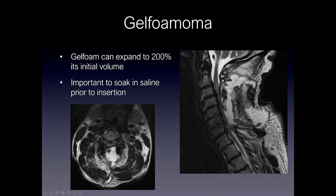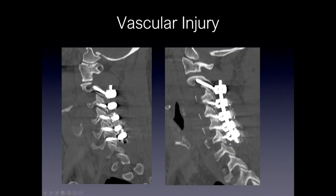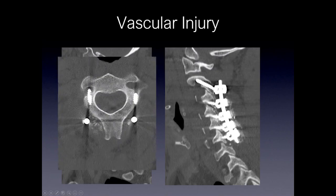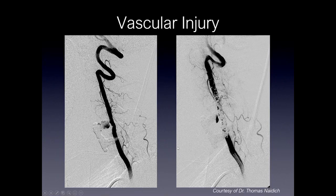Vascular injury is an important thing to identify. In this patient, the lateral mass screws look good on one side, but on the contralateral side the screw is approaching the transverse foramen where the vertebral artery sits. On the axial, you can clearly see the screw entering the transverse foramen — if you see this, certainly mention it and you can request a CT angiogram for evaluation of the vertebral artery. In another case, an ACDF resulted in a pseudoaneurysm off of the vertebral artery, which was ultimately treated with coiling to close off the aneurysm.